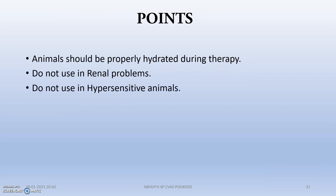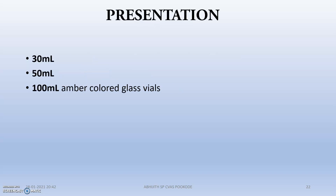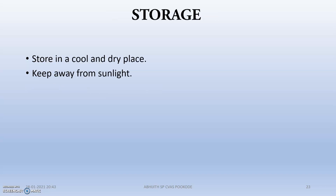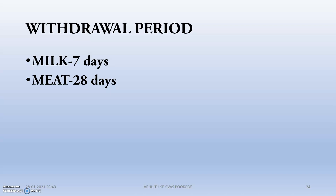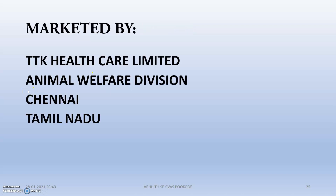Important points: animals should be properly hydrated during therapy. Do not use in cases of any renal problems, and do not use it in hypersensitive animals. Presentations available are 30 ml, 50 ml, and 100 ml vials — the 100 ml vial is most commonly available. Storage should be in a cold and dry place, kept away from sunlight. The withdrawal period for milk is 7 days and for meat is 28 days. Marketed by DBK Healthcare Ltd., Animal Welfare Division.